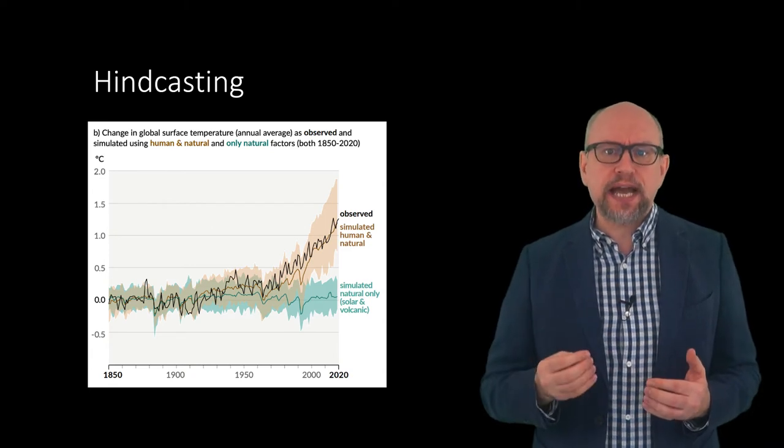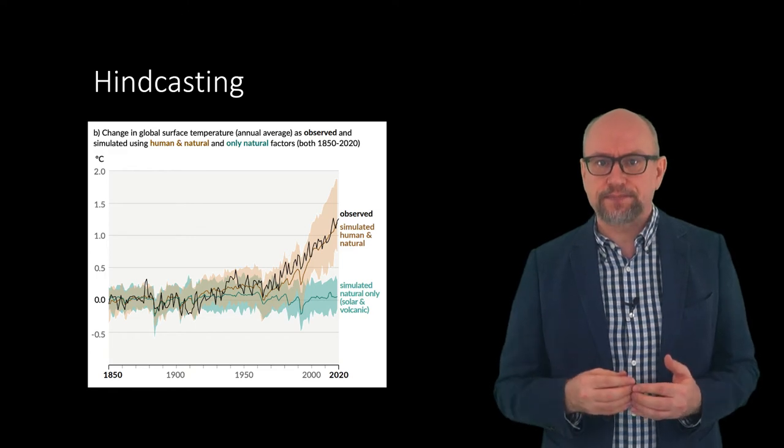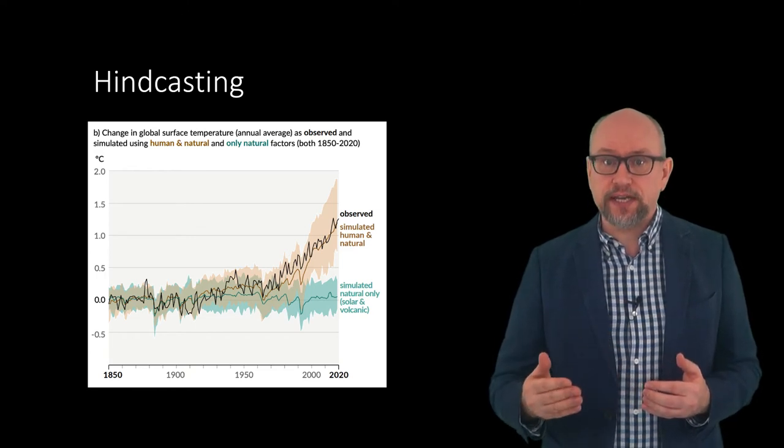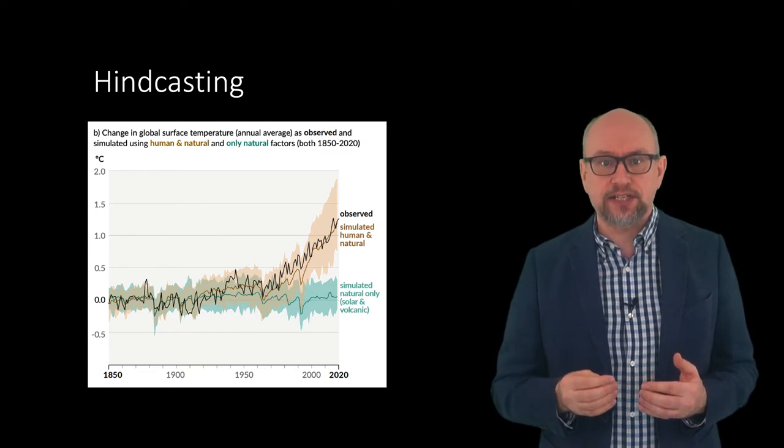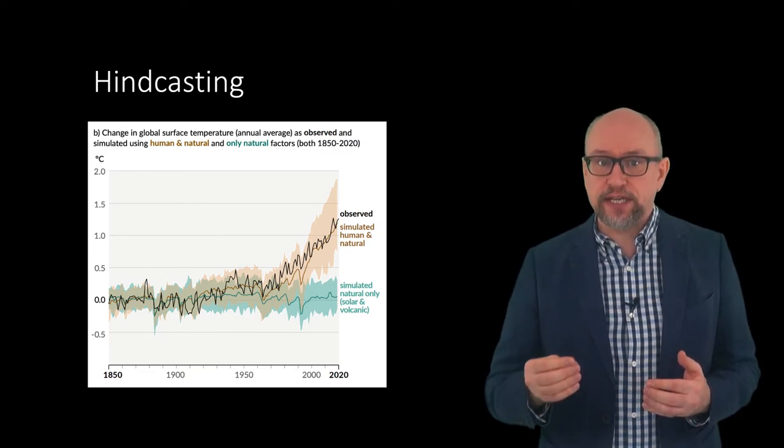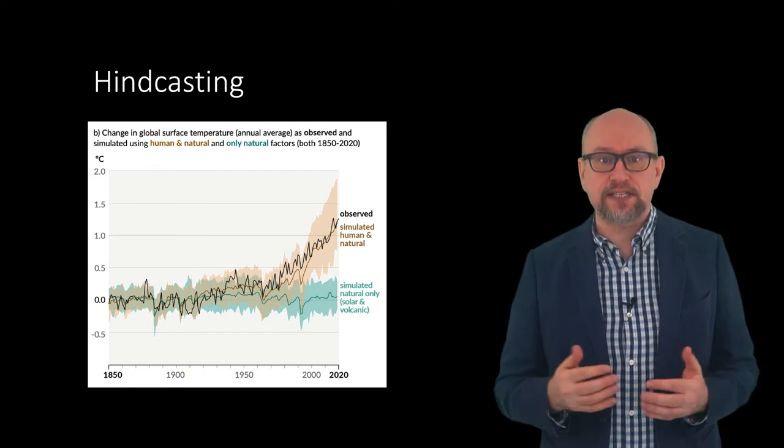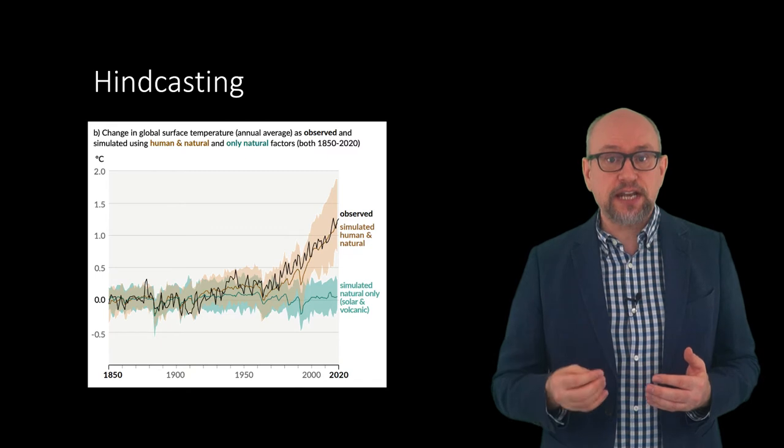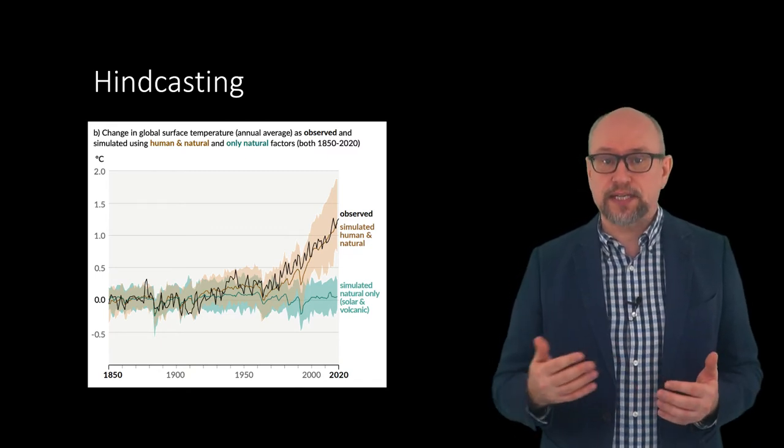However, it will not be able to reproduce the observed changes in Earth's surface temperature. Although the model is free running, it does need to be forced by natural and anthropogenic changes. Natural forcings involve incorporating solar variations and volcanic activity. Anthropogenic forcings involve the changes in greenhouse gases, sulphur aerosols and land use.